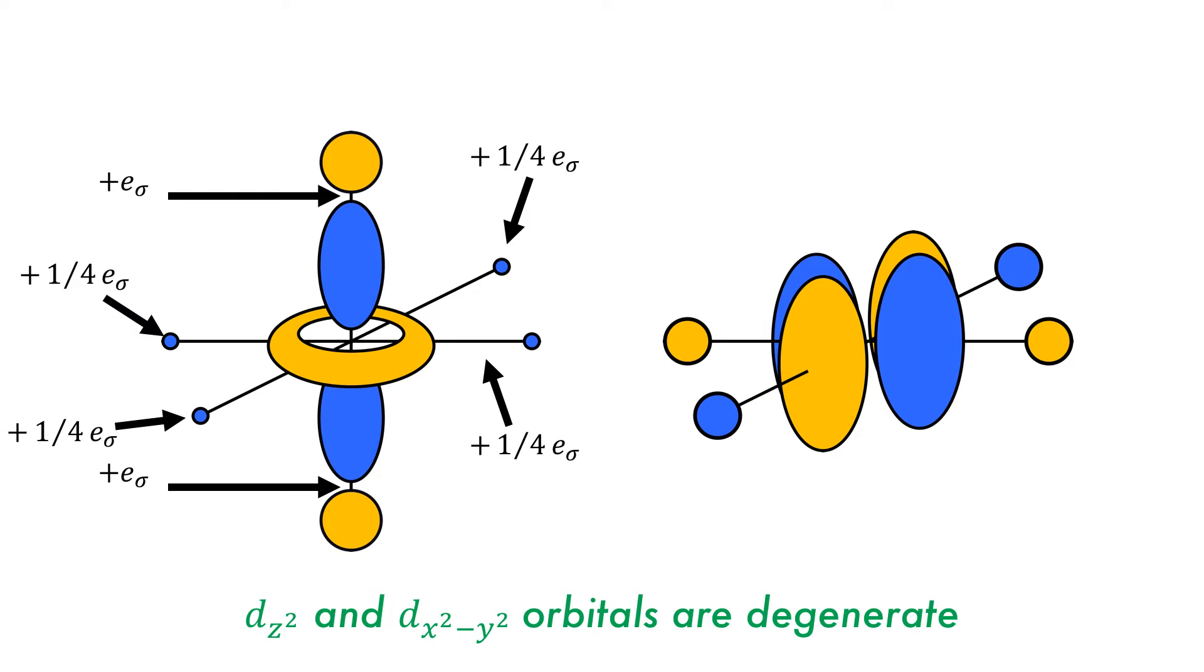This is due to the shape of the d-orbital around the equator, and that the coefficient from the symmetry-adapted linear combination is much smaller than the z-axis interactions. This gives a total energy of minus 3 e-sigma.